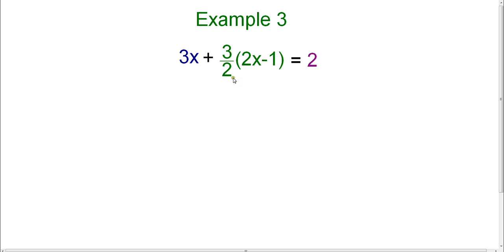However, if you see a fraction, the very first thing that you want to do is you want to get rid of the fraction. Now, because this particular equation only has one fraction, it's pretty easy. We're going to take a look at the denominator, which is 2, and if we multiply every single term by 2, we can eliminate the fraction.